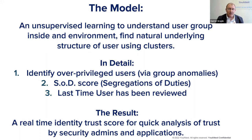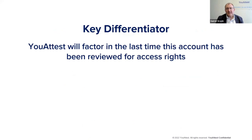In addition, Uattest provides segregation of duties violations — let's put that into the score. And lastly, we have something no one else has: we put into the identity trust score when the last time this user was actually reviewed. Let's find those orphan and ghost accounts and make sure those are analyzed.